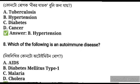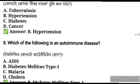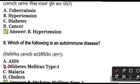Which disease is known as the autoimmune disease? This is diabetes mellitus type 1. This is the main question.